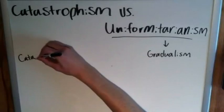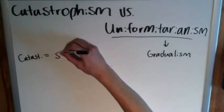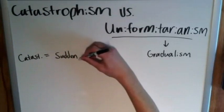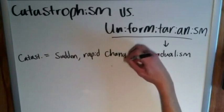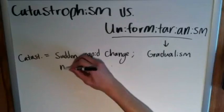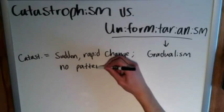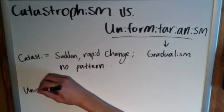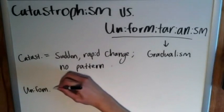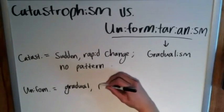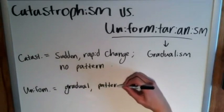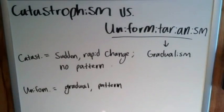To summarize: catastrophism means sudden, rapid change with no particular pattern. Uniformitarianism, on the other hand, says that change is very gradual and there is a pattern — it repeats the same processes over and over again. There is a uniformity to what's been going on; the same processes have been occurring at relatively constant rates.